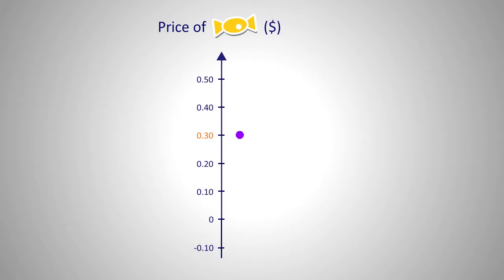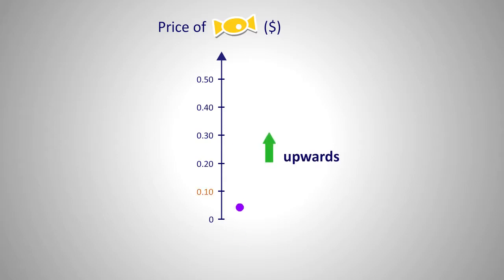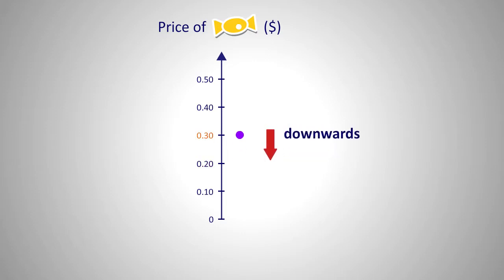What about having the price of a sweet as negative 10 cents? We can draw a dot here, but it doesn't make sense for the price of a sweet to be negative. So again, we can just drop the negative region of the number line. You realize as you move upwards on the number line, the price increases. As you move downwards, the price decreases.